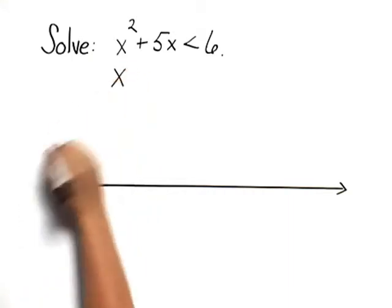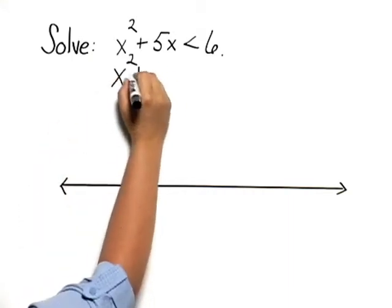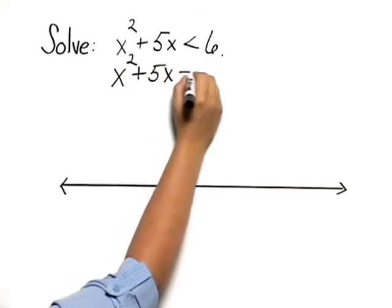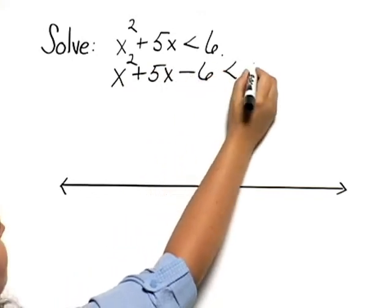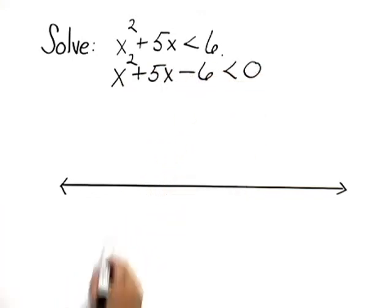Let's start by subtracting 6 from both sides to get x squared plus 5x minus 6 is less than 0. This is an equivalent inequality, but now we can look at where something is positive or negative.